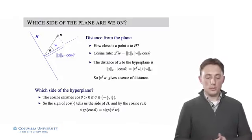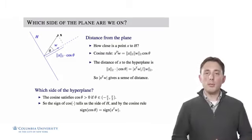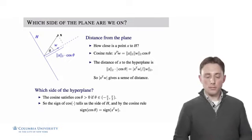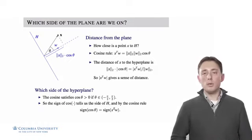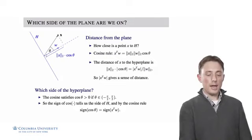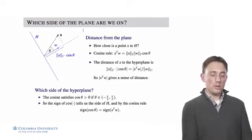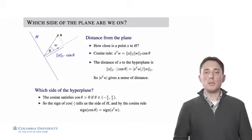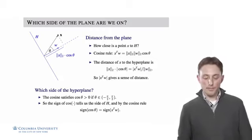In short, if I have a hyperplane and I want to know which side of it any particular vector falls on, I take the dot product of that point with w and take the sign. If it's positive, then x is on the side pointing in the direction of w. If it's negative, x is on the side pointing in the opposite direction of w.